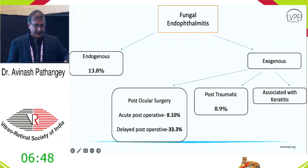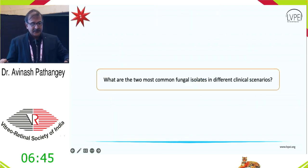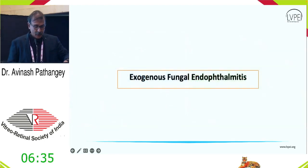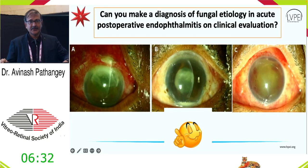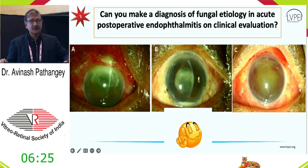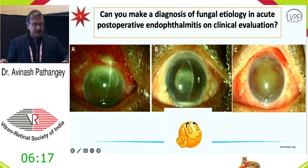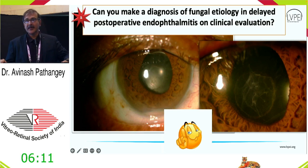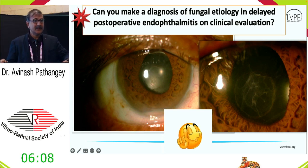The two most common fungi seen in different clinical scenarios are Aspergillus and Candida. In exogenous fungal endophthalmitis, a key challenge is that unlike microbial keratitis, it is very hard to make a clinical diagnosis based on clinical observations alone. Can we diagnose possible fungal etiology in acute post-operative endophthalmitis? Unlikely. But in delayed post-operative — given that 33 percent of cases in India are fungal — it is possible.